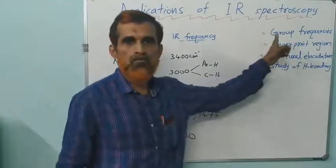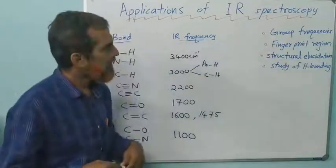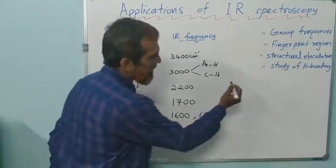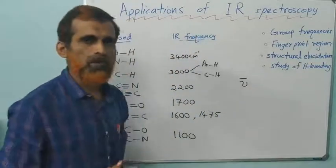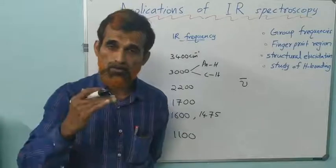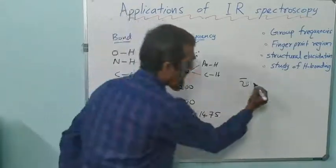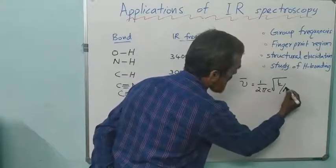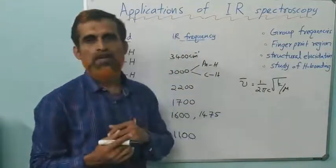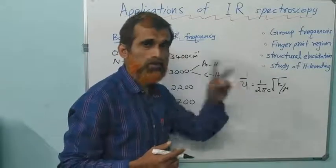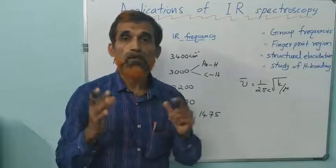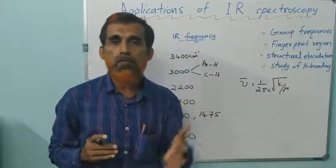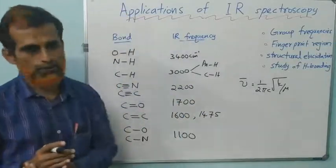First we discuss the concept of group frequencies. We know that IR frequency, the frequency of IR radiation required for the vibrational transition of a molecule, is given by the equation nu bar equals 1 by 2 pi c root of k by mu. The frequency in wave number depends on two factors: k, the force constant which is a measure of bond strength, and mu, a measure of the atomic mass of the bonded atoms.